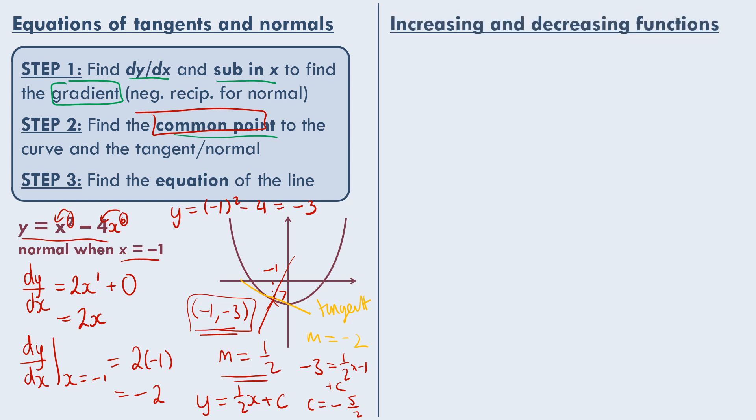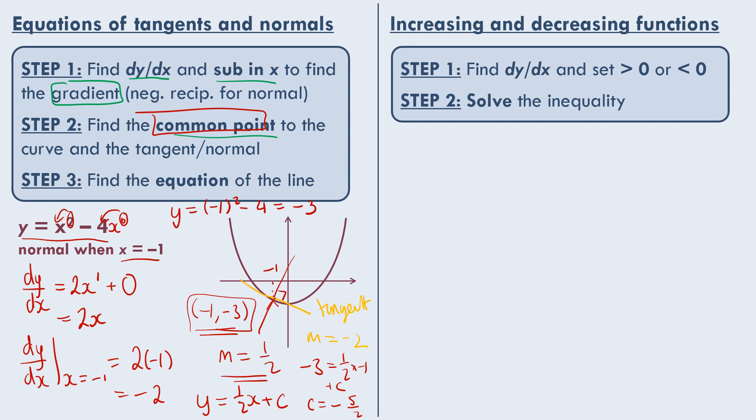Next we have increasing and decreasing functions. So again here we have two steps. The first one is to find dy by dx and set this greater than 0 or less than 0. Greater than 0 if you're looking for increasing functions, and less than 0 if you're looking for decreasing functions. Then we need to solve the inequality we've just formed.